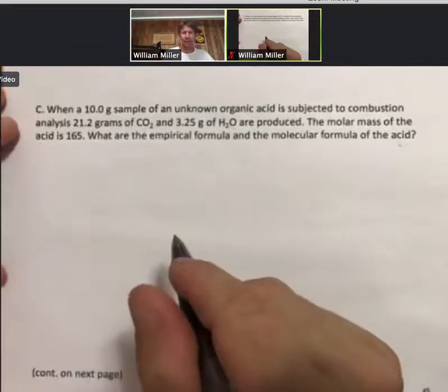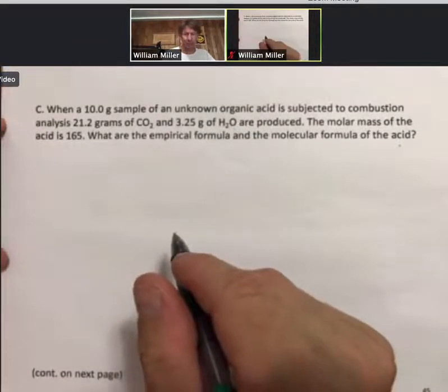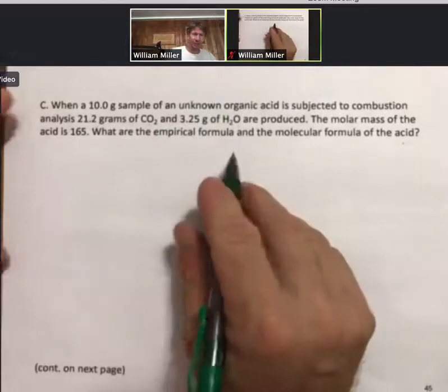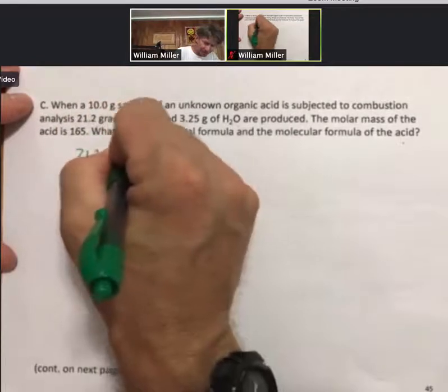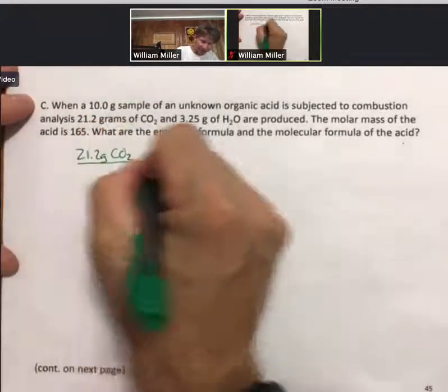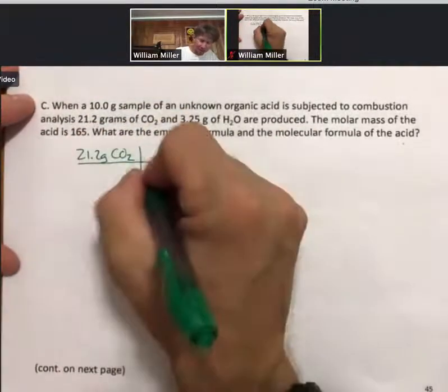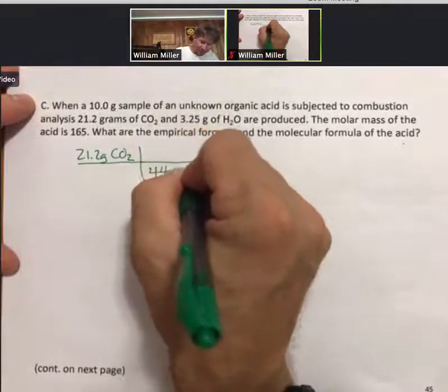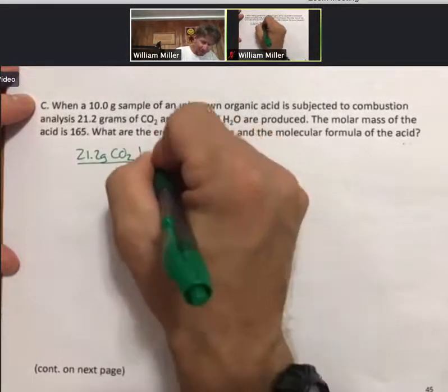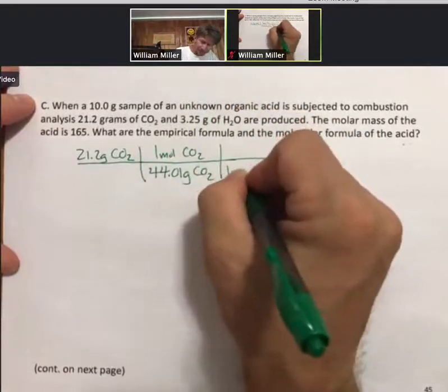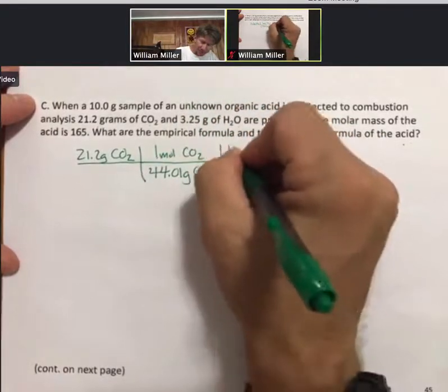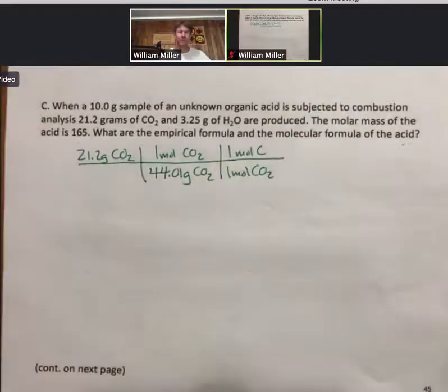A 10 gram sample yields 21.2 grams of carbon dioxide and 3.25 grams of H2O. The molar mass is 165. What are the empirical formula and the molecular formula? Oh, this is an unknown organic acid. So, since this is the third time I'm going through the start of this process, I'll go relatively quickly. So, 21.2 grams of carbon dioxide, 44.01 grams carbon dioxide per mole. One mole of carbon dioxide to one mole of carbon.